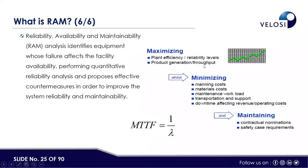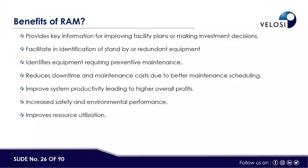The objectives of RAM include increasing plant efficiency and reliability levels, maximizing product generation throughput, and minimizing costs. A proper RAM study can reduce material costs, maintenance workload, transportation and support costs, and downtime affecting revenue and operating costs. It also helps in maintaining contractual nominations or agreements and reduces safety threats when proper RAM is done. Benefits include identifying bad actors — sometimes RAM is done at two stages: at a new project stage and for an operating facility.